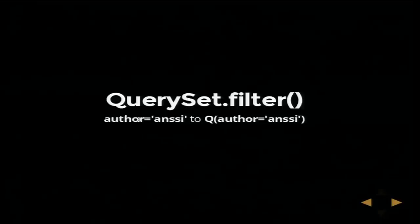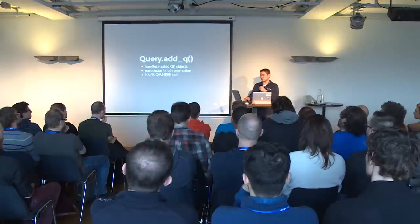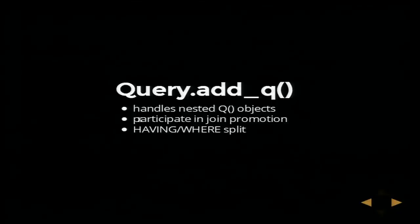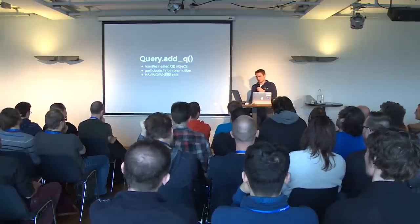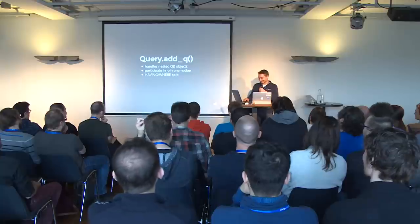Let's start digging into the methods. We have the `build` method — it takes in an argument like `author=ansi` and all it does is convert it to a Q object, then calls `query.add_q`. The `add_q` is a preprocessor for the ORM. It handles nested Q objects — so if you have a boolean tree with OR conditions, `add_q` will handle that. It also participates in join promotion. We are not going to talk about join promotion today because it's kind of complicated — it would require an hour-long talk itself.